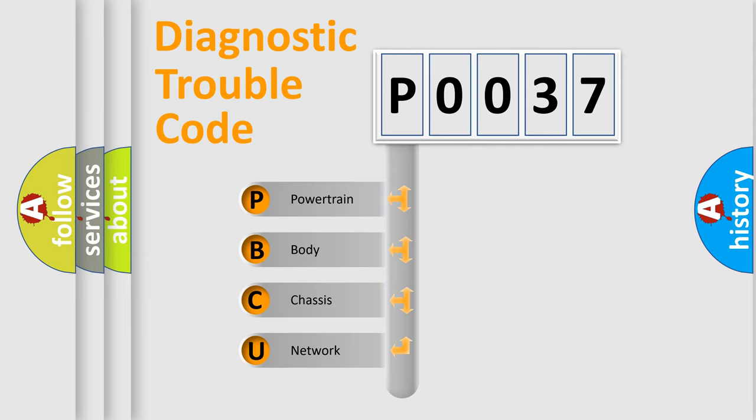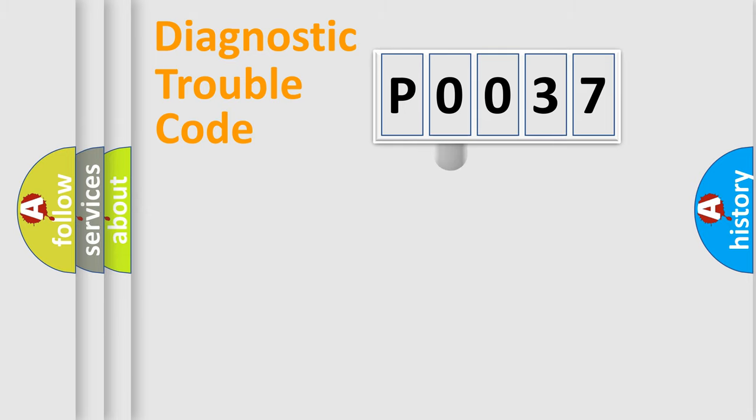We divide the electric system of automobile into four basic units: Powertrain, Body, Chassis, and Network. This distribution is defined in the first character code.